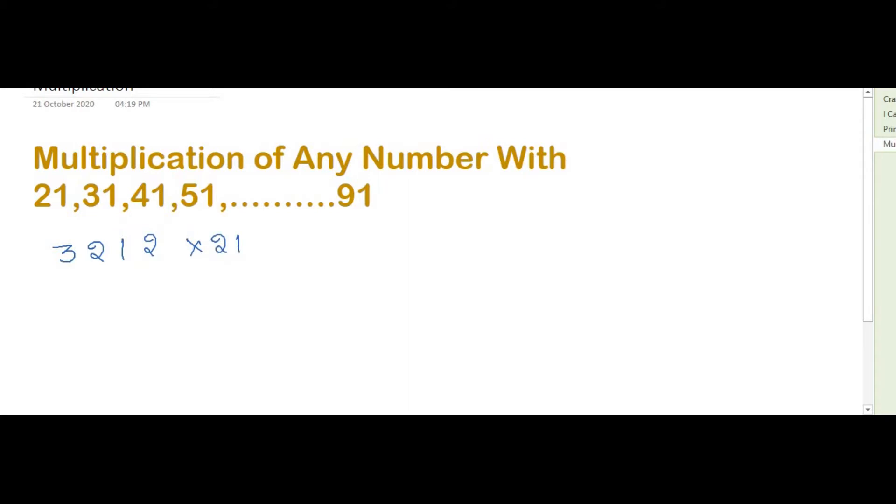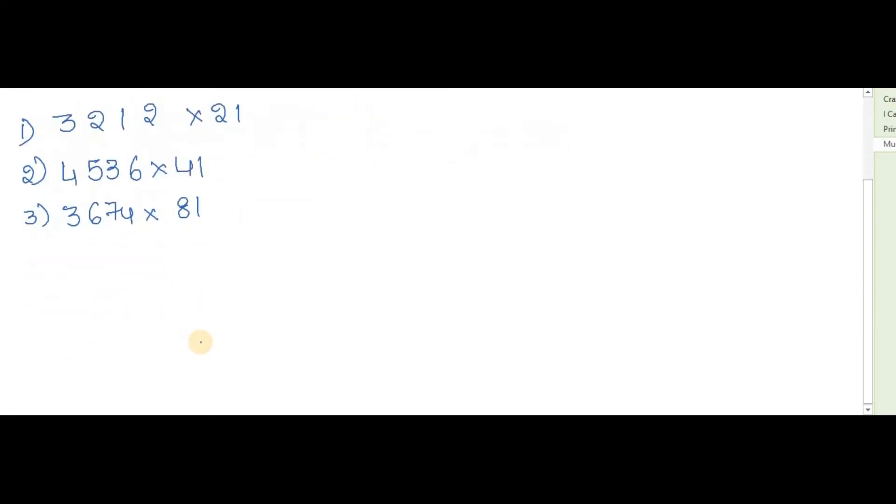3211 multiplied by 21, next one is 4536 multiplied by 41, and the next question is 3674 multiplied by 81.